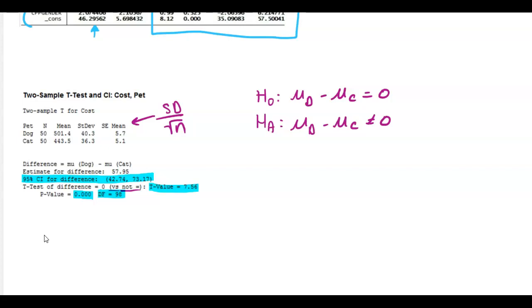So with a small p value, if we were going to write a statement, we would say with a small p value of zero, we would reject the null. There is strong evidence that the cost of dogs and cost of cats is not the same. It's not equal.